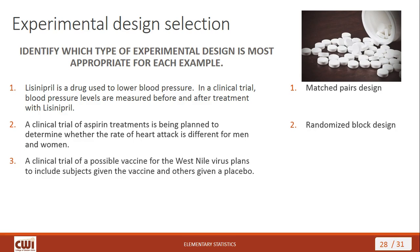Next: a clinical trial of a possible vaccine for the West Nile virus plans to include subjects given the vaccine and others given a placebo. The most appropriate design here is completely randomized design — you take a group of people and randomly select who gets the vaccine or who gets the placebo. That's completely randomized design.